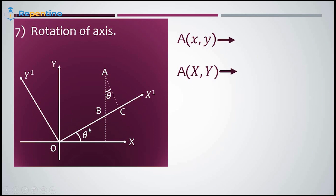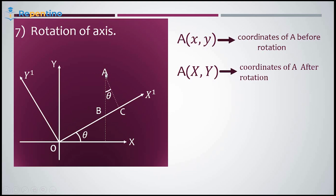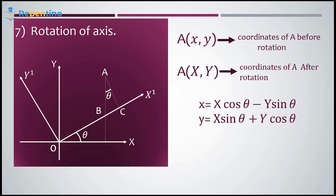Rotation of axes: the initial position of the axes is x and y. The final positions after rotation by theta degrees anti-clockwise are x-dash and y-dash. For a point A, if (small x, small y) are its coordinates before rotation and (capital X, capital Y) are its coordinates after rotation, then: small x equals X·cos(theta) minus Y·sin(theta), and small y equals X·sin(theta) plus Y·cos(theta).